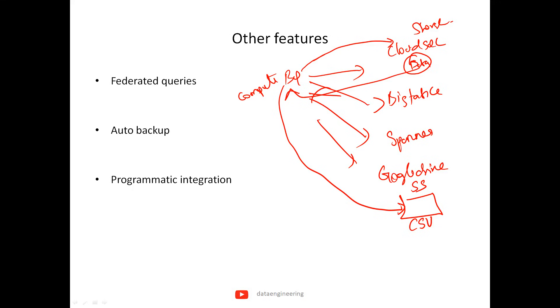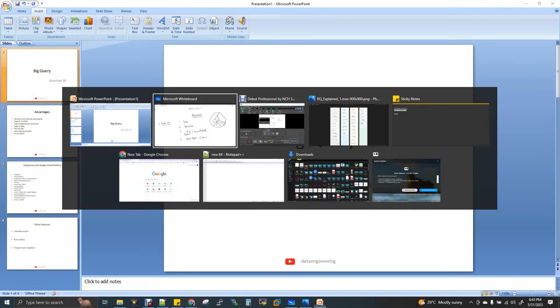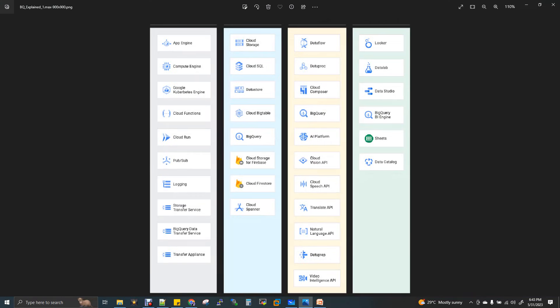BigQuery can also process external file formats like ORC, Parquet, and other open source formats. It supports auto backup via replication — similar to HDFS and S3 — so your data is fault tolerant. Even if a particular node goes down, your data is still available in a different node. Any changes made to data in a table are stored for seven days, so you can see different time-versioned data. For programmatic integration, BigQuery supports multiple languages including Java, Python, Node.js, C#, Go, Ruby, and PHP.